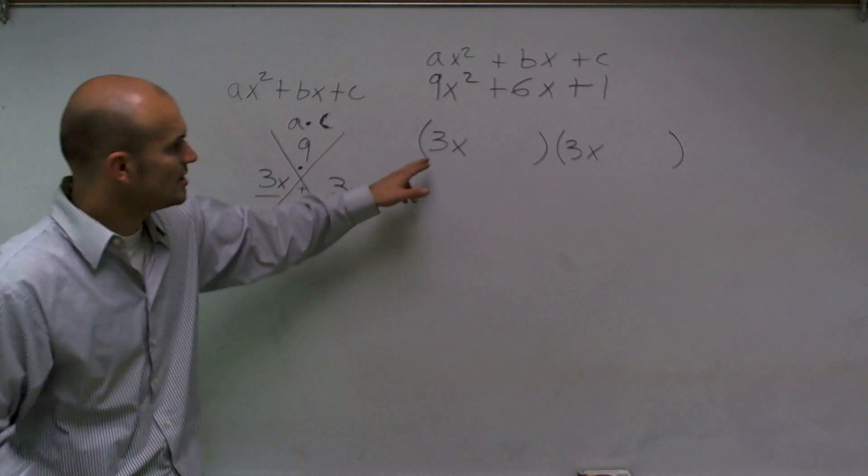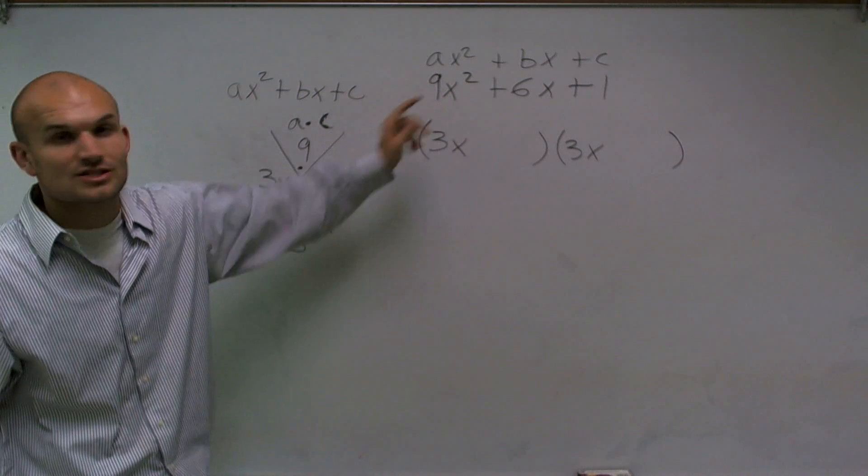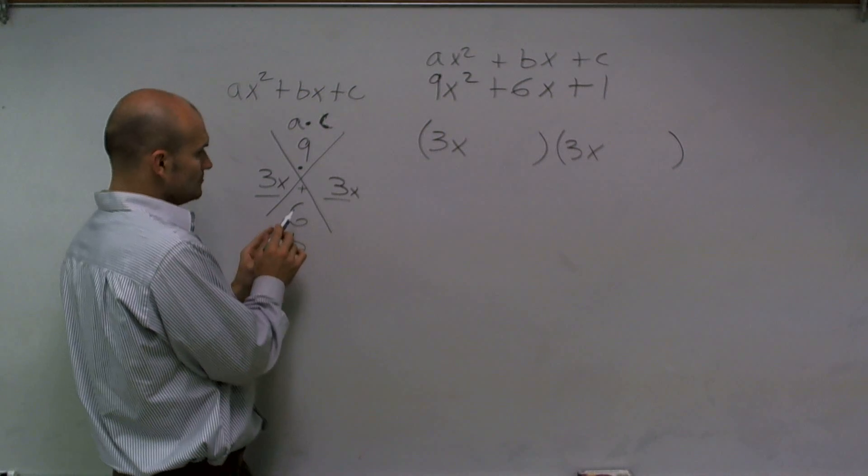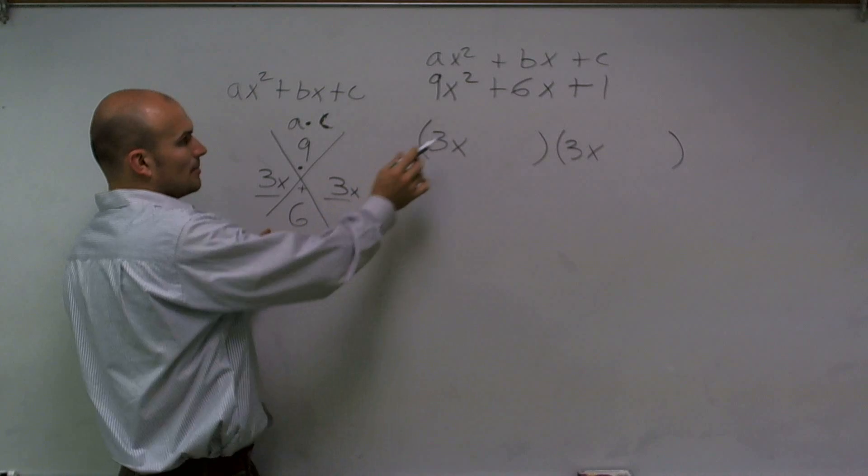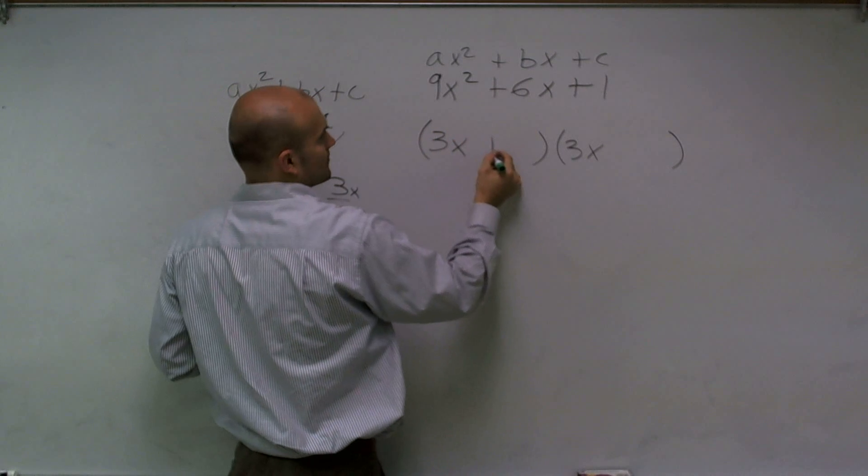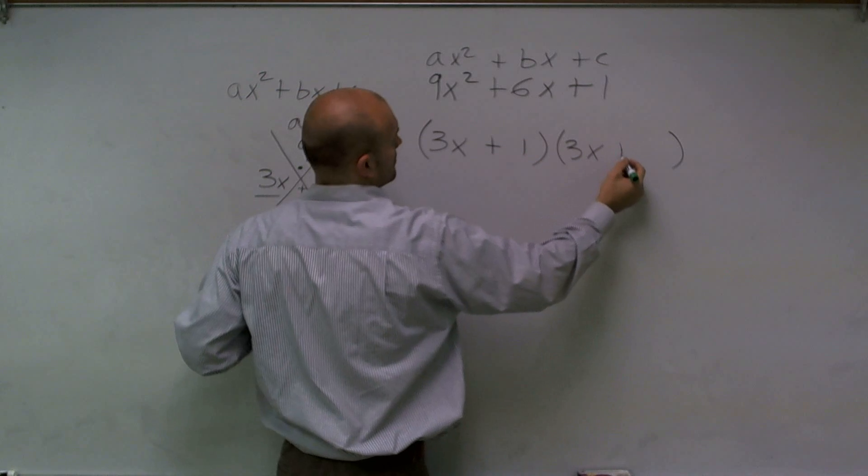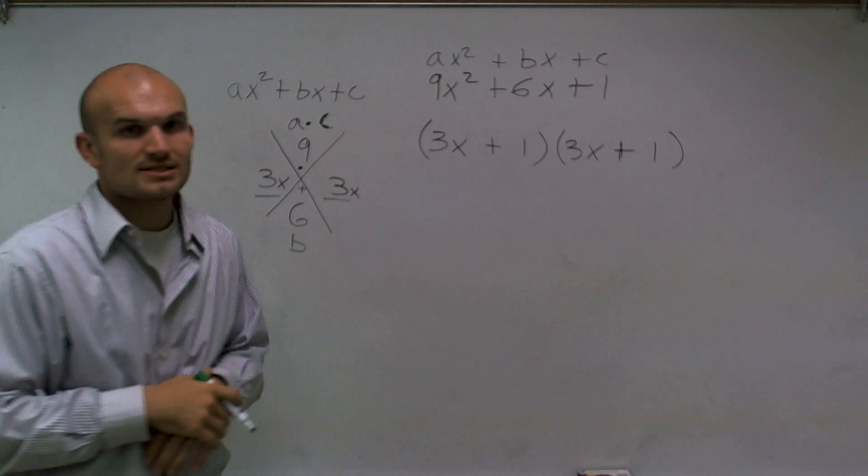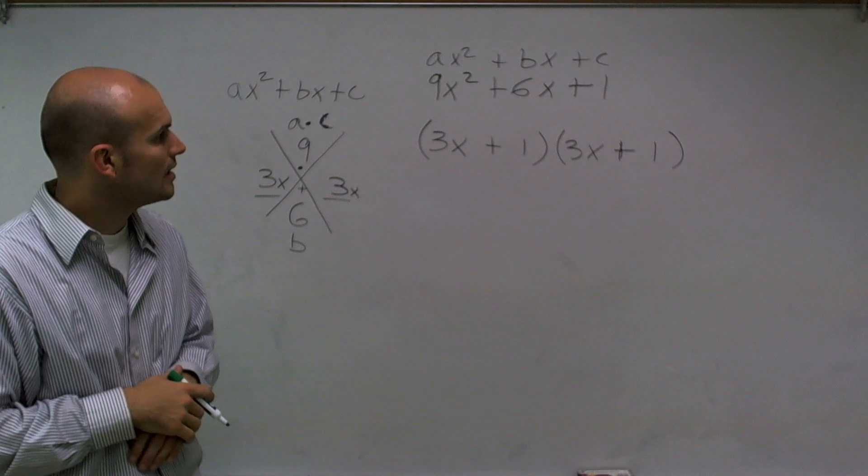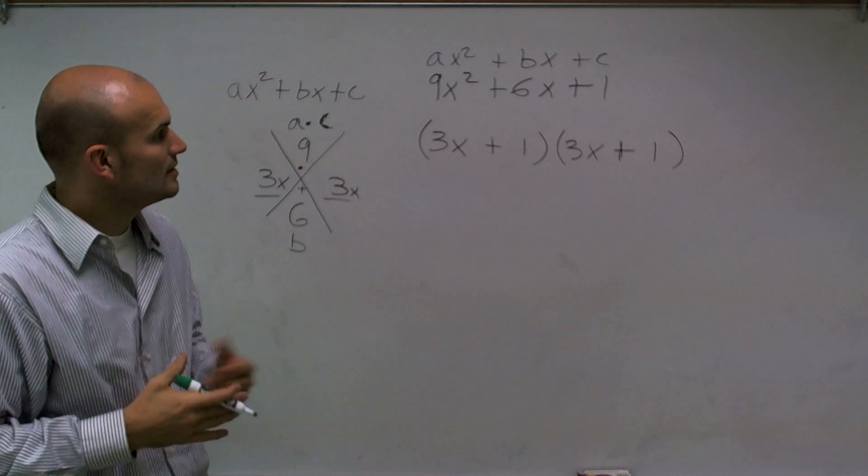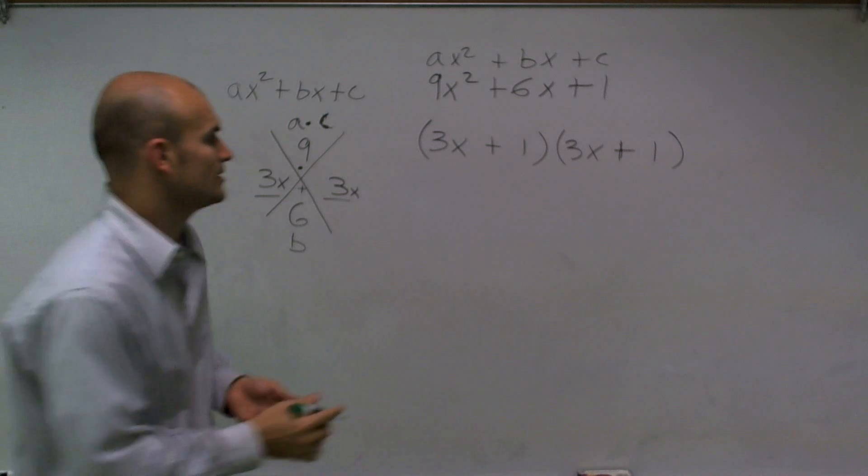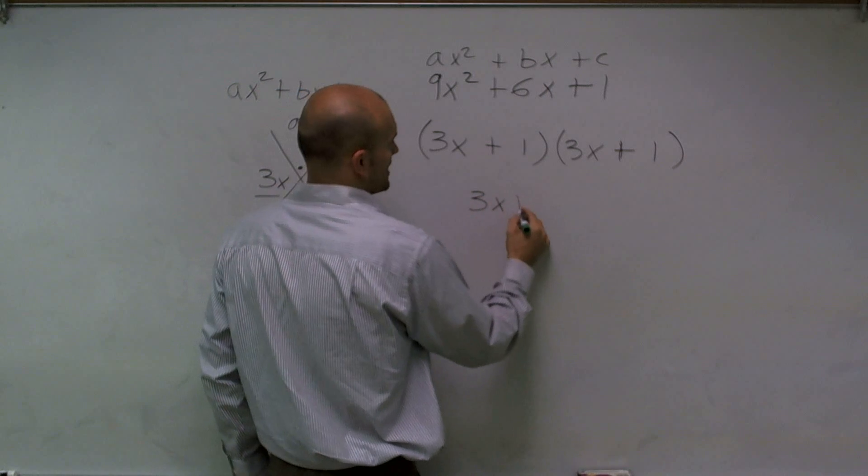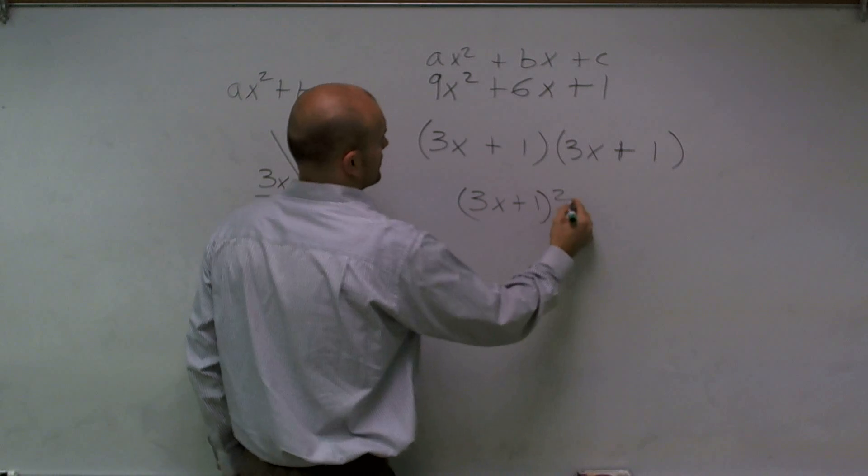Because remember, these two numbers have to multiply to give me 9x². Well then, my last two numbers have to multiply to give me 1. So what I notice is I have 3x + 1 times 3x + 1, which reduces down to (3x + 1)².